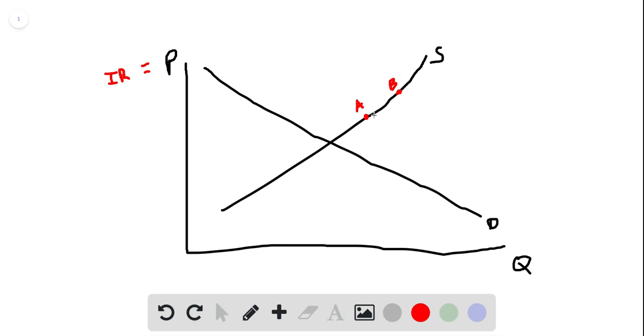A movement along the supply curve comes about from a change in interest rate, or in the price of money. So an increase in interest rate is going to increase the quantity supplied and get us from point A to point B.